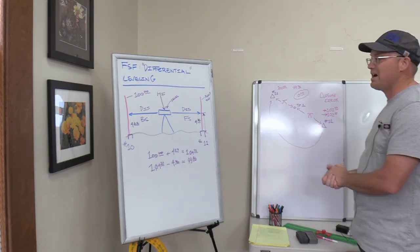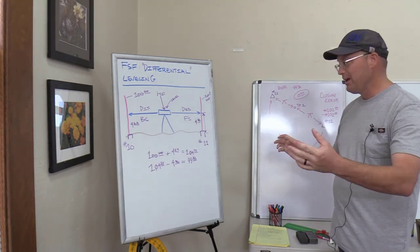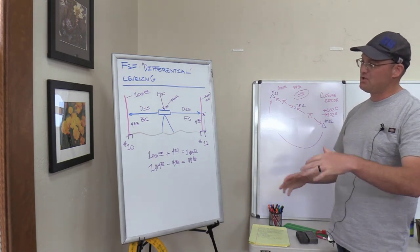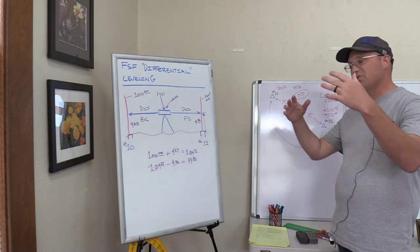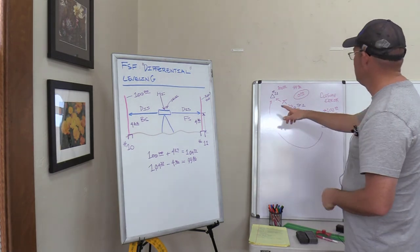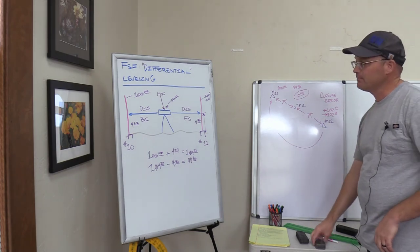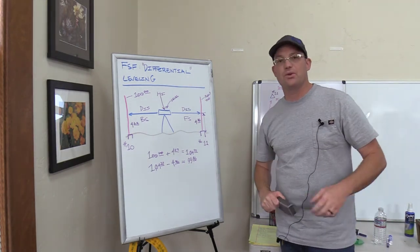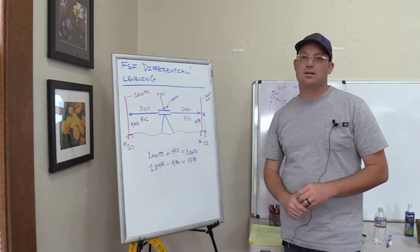We'll do another video that talks about what to do with your closure error in a level loop and how to adjust it. I wanted to run you guys through just the basics of differential leveling — it's just addition and subtraction, reading the rods. We'll also do a video where we go through some level notes, do a short level loop, and show you how the notes look. Appreciate you watching — hope you enjoyed this Field Survey Friday video. We'll catch you on the next video.